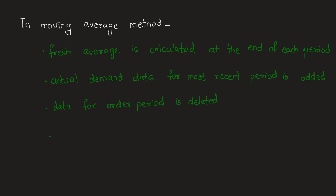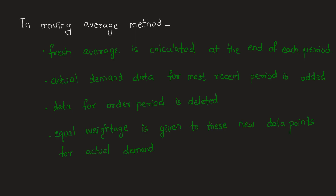For these new data points of actual demand, equal weightage is given. That is, the coefficients or factors with which the data is multiplied while taking the sum will be the same for all values, or rather will be one. That's how equal weightage is given to the recent data points.